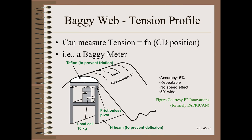The most intuitive measure of bagginess is tension profile. Unfortunately, there are only a couple of instruments that can do this. The first is an invention by FP Innovations that I detailed in an earlier Web 201 clip. It has a resolution of about one inch or two centimeters, because that is the width and spacing of the individual load cells. It has extraordinary sensitivity and repeatability. However, this invention exists only in one place on Earth, but anyone can make use of the testing service if they send in a suitably sized wound roll for analysis.